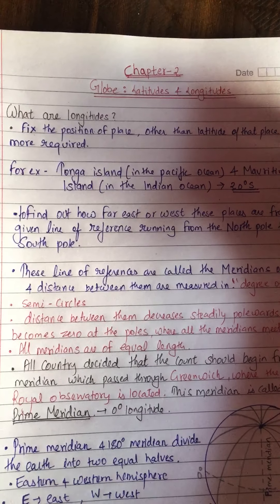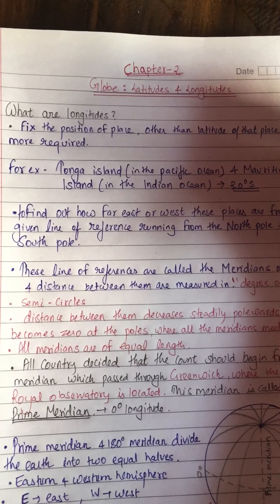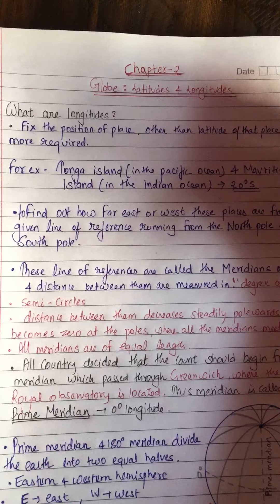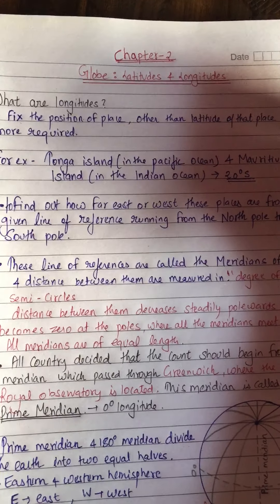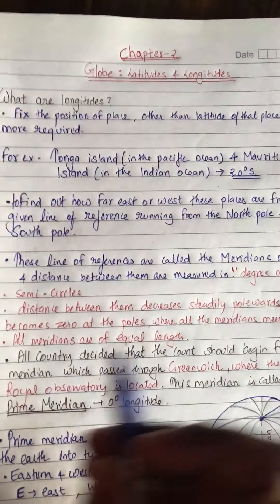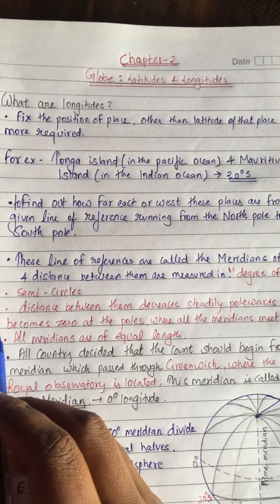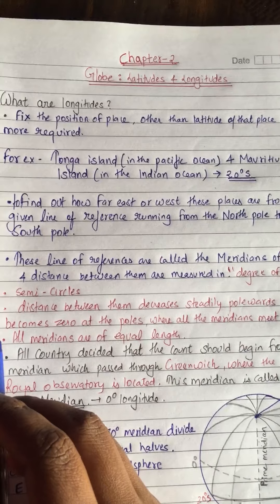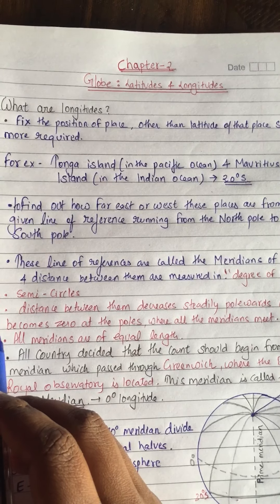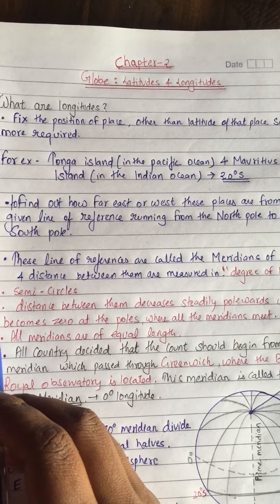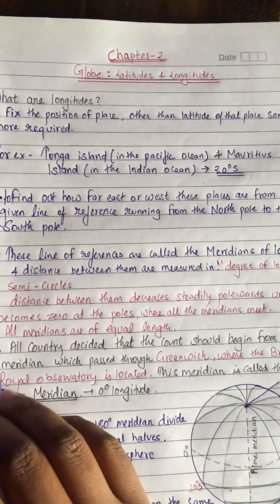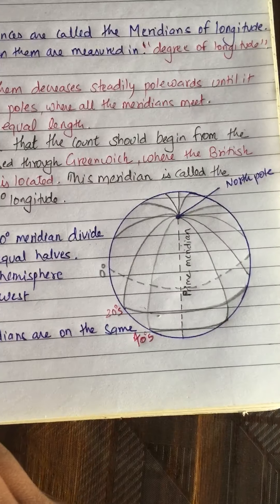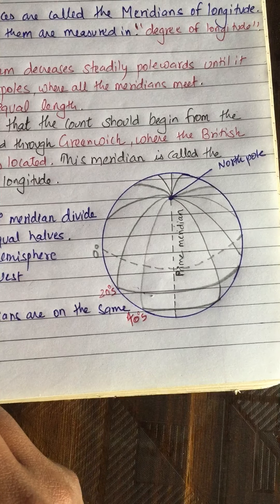In this lecture, I am going to teach you about longitudes. What I have taught you in the previous lecture is that latitude is not sufficient to tell us about the exact location of a place. Something other than latitude is required — that is longitude. Let us understand with the help of a diagram why latitude alone is not giving the exact location.